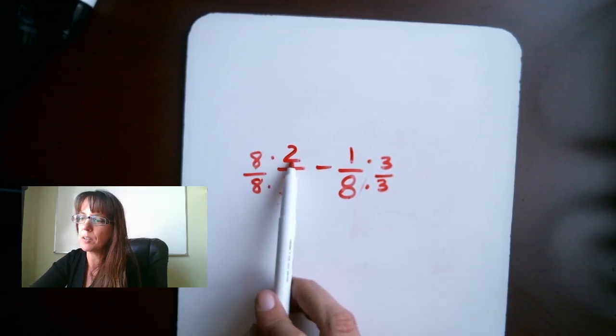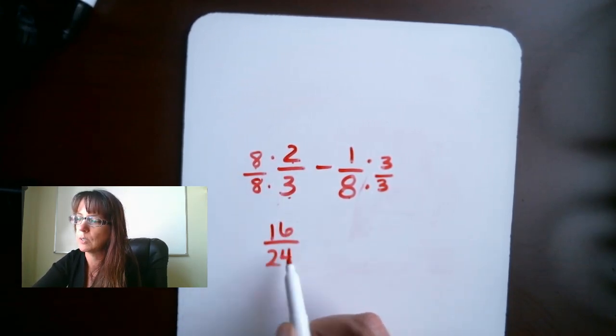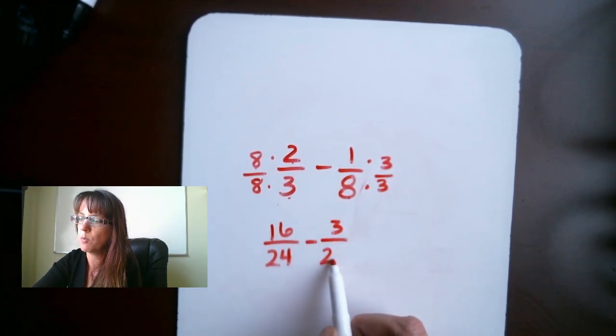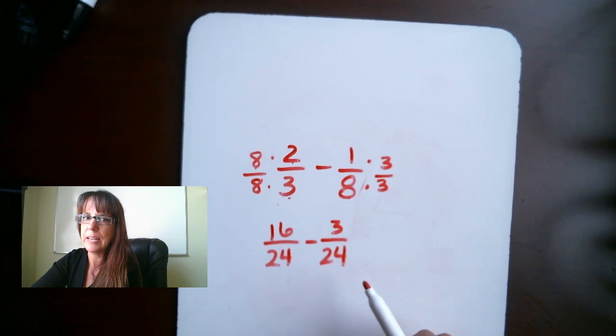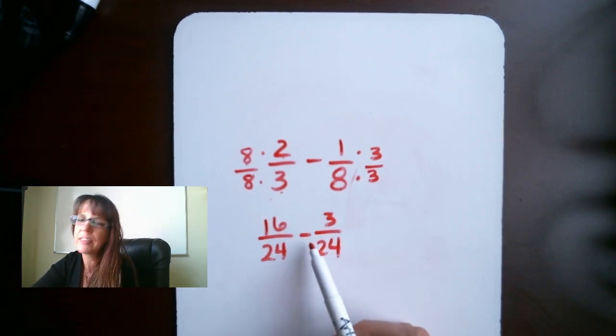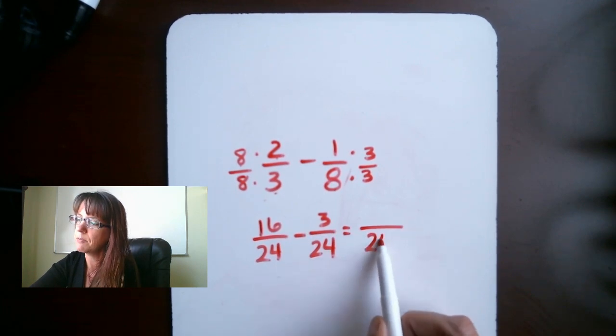Okay, so again, we're allowed to multiply anything by 1, but we want that 1 to be written a little bit differently. We're going to do 3 over 3 because that gives us 1. On this side, we do 8 over 8. What we're going to do is multiply straight across the top, straight across the bottom, end up with 16 over 24, minus 1 times 3, 3 over 24.